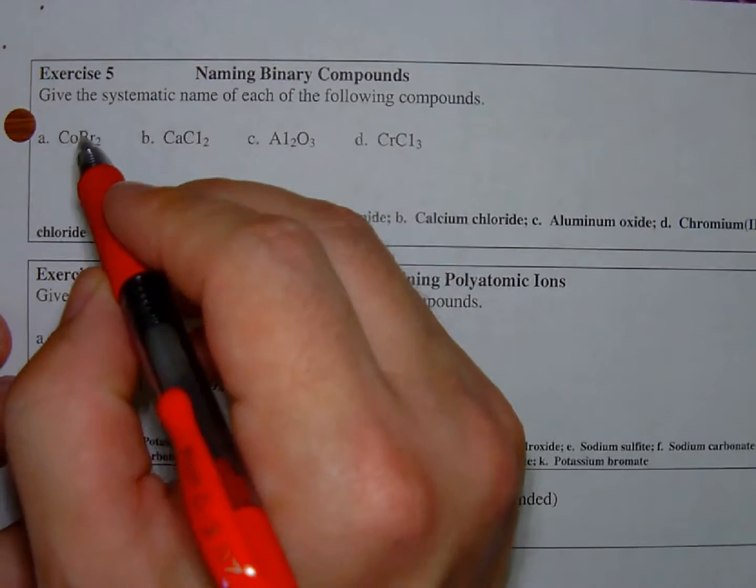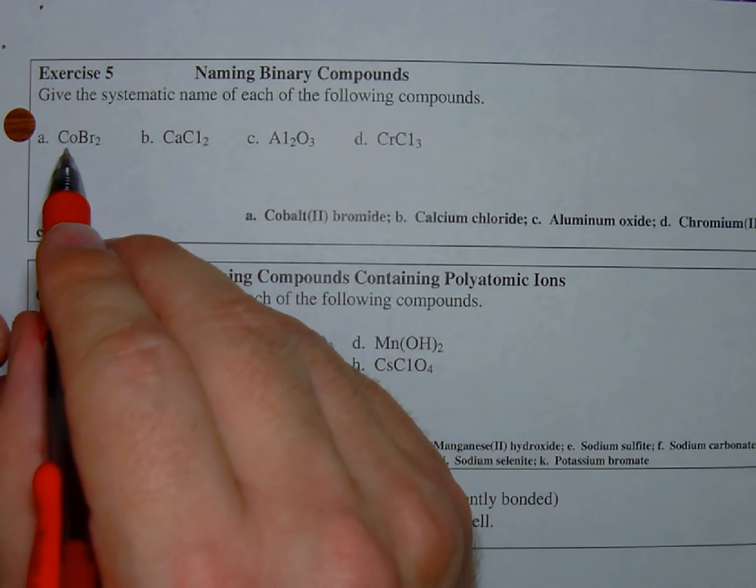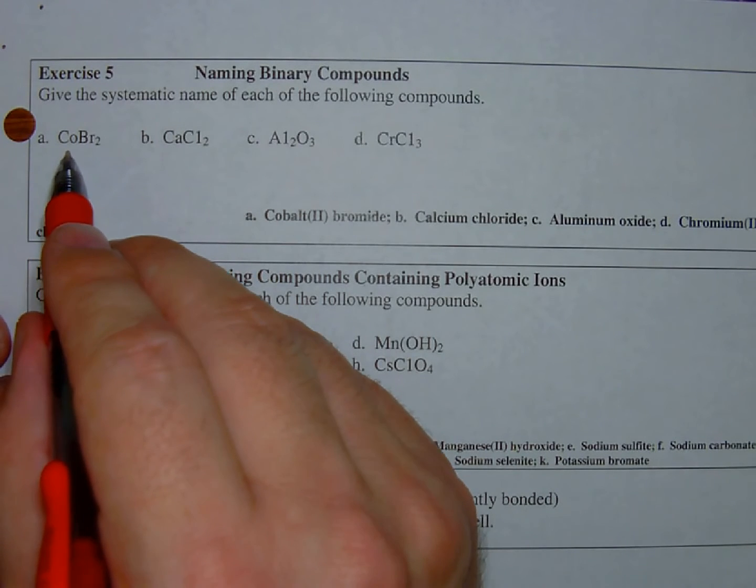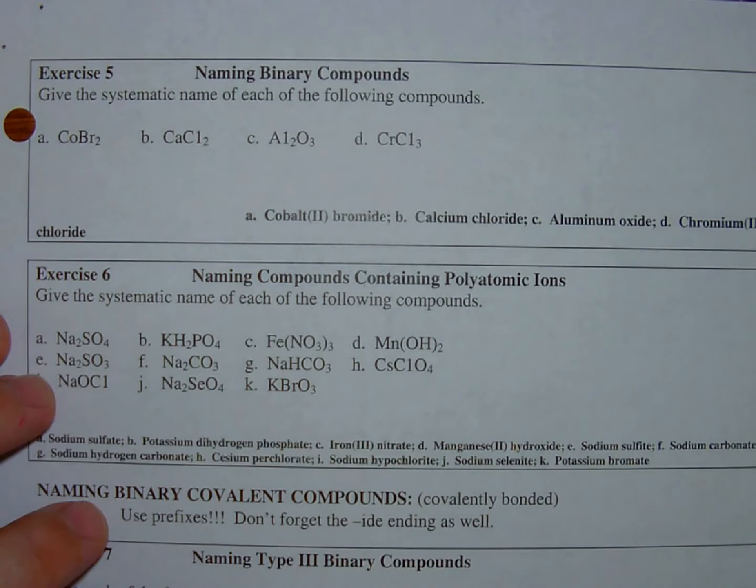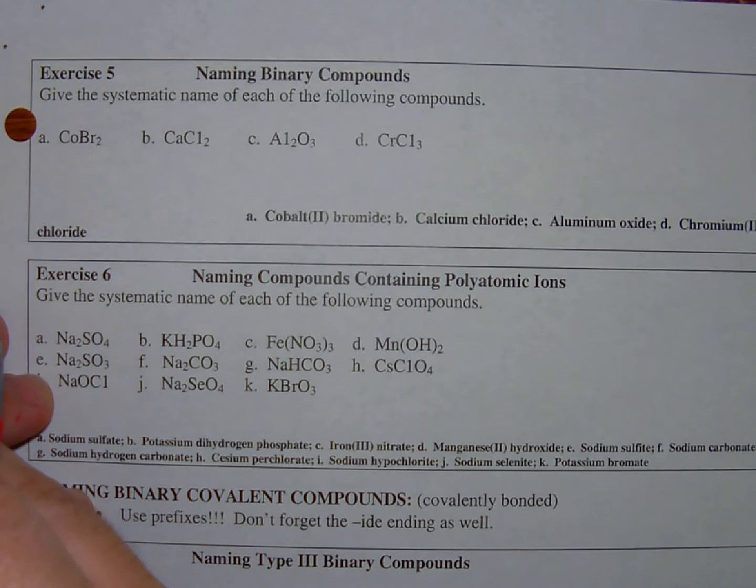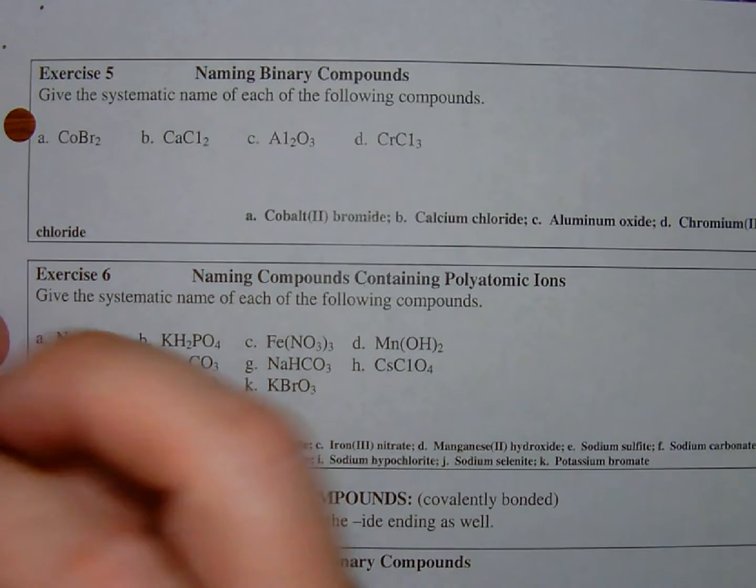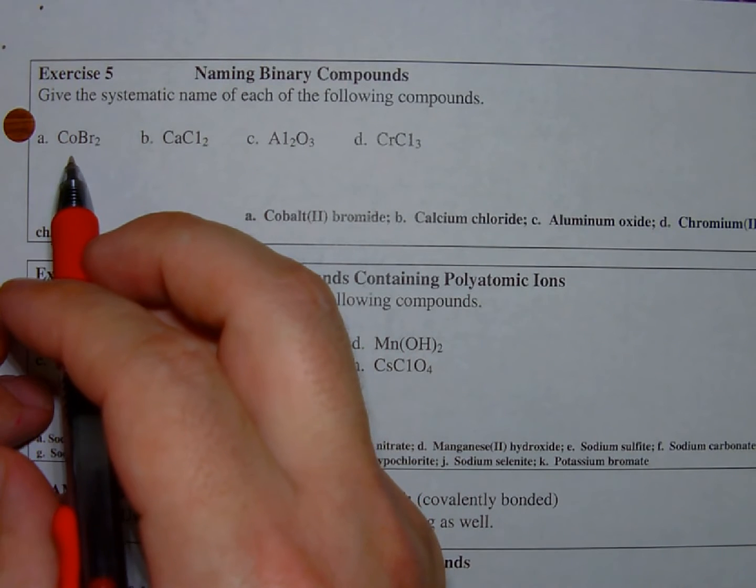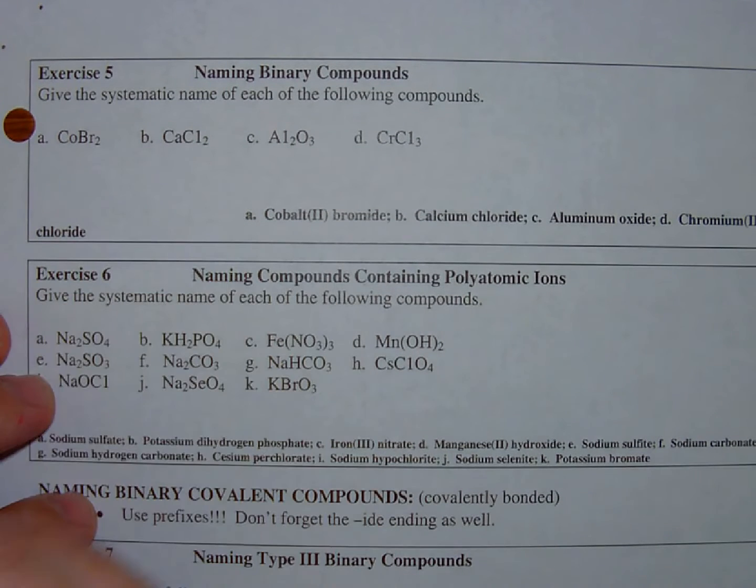So as we get started with A here, this is cobalt. Cobalt is a transition metal, and it's not one of those exceptions like cadmium, zinc, and silver that only form one cation, even though they're truly transition metals. This is cobalt, so it forms at least two. So I'm going to have to use the Roman numeral system, the stock system here.